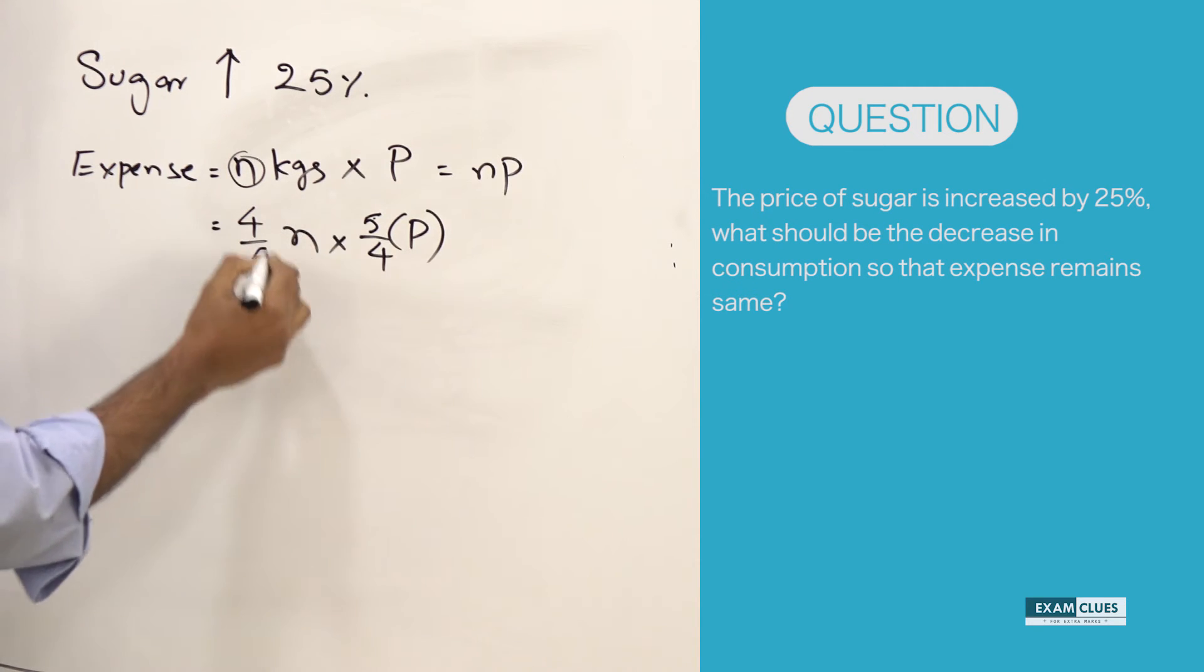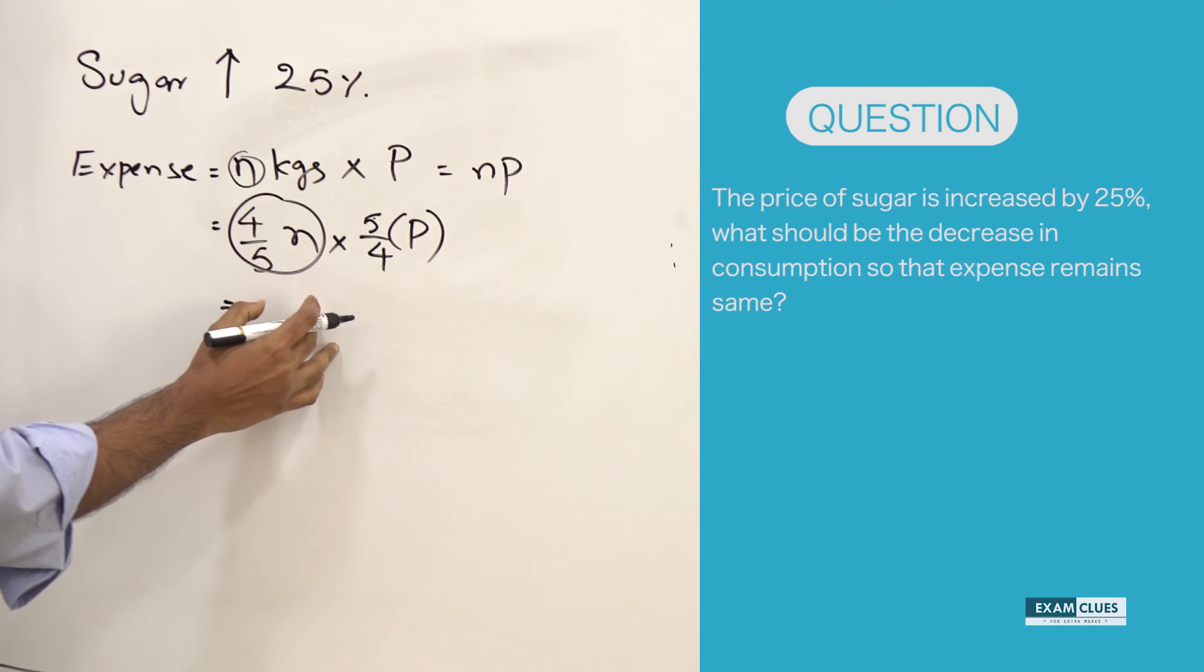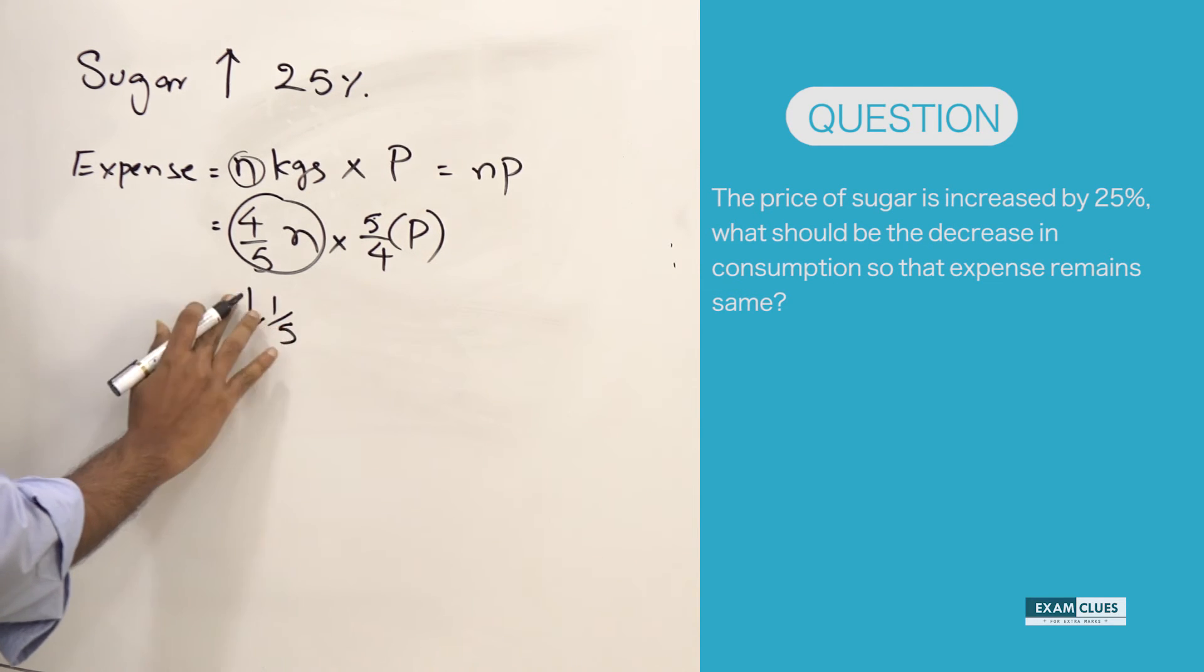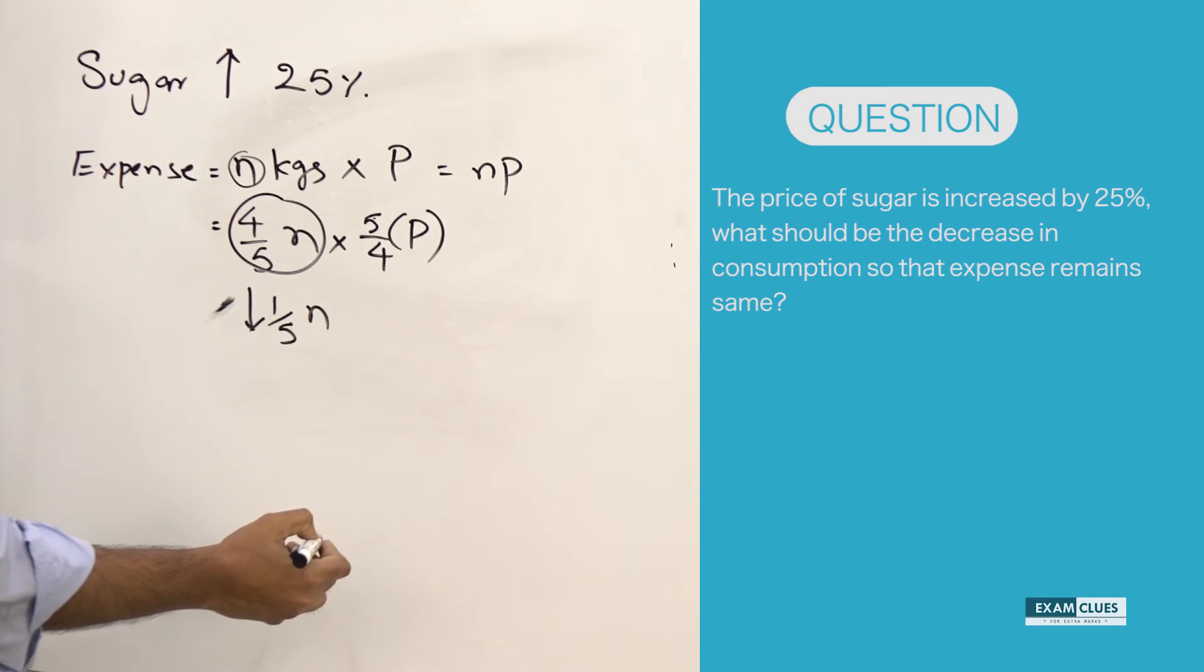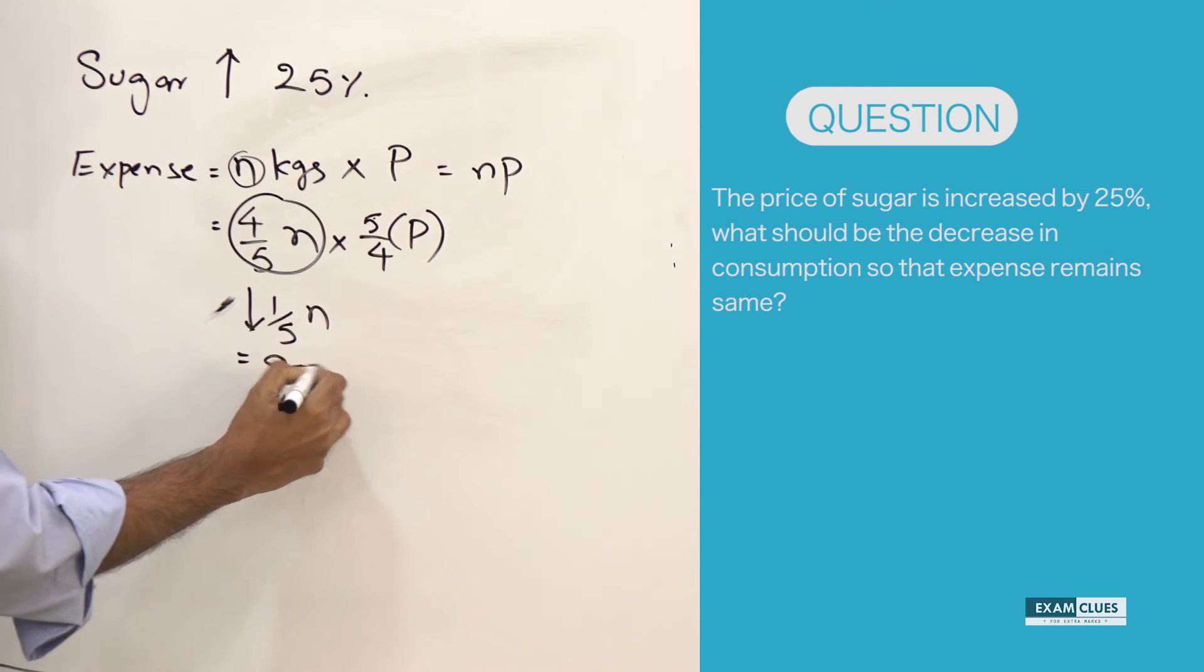So the answer for it is the consumption should reduce by 1 by 5. 1 by 5 is nothing but - the decrease in consumption should be 1 by 5 N, which is nothing but 20%. So the answer is simply 20%.